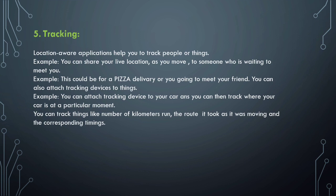The last service is tracking. Location-aware applications help you track people or things. For example, you can share your live location with someone who is waiting to meet you, or track a food delivery in real time. You can also attach tracking devices to your car and track where it is at a particular moment — including the number of kilometers traveled, the route it took, and the corresponding time for each part of the journey.